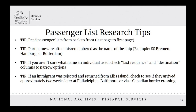If an immigrant was rejected and returned from Ellis Island, check to see if they arrived approximately two weeks later at Philadelphia, Baltimore, or via a Canadian border crossing. Ellis Island was known to be one of the most stringent ports, and you can sometimes find immigrants who failed to pass through Ellis Island entering at another location a couple of weeks later. Keep in mind that a rejection at Ellis Island was not deportation, as the individual never officially entered the country, so they were readily allowed to attempt entry at another location.